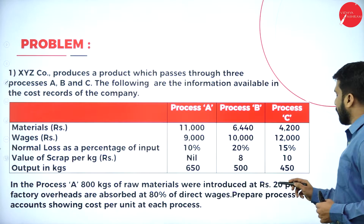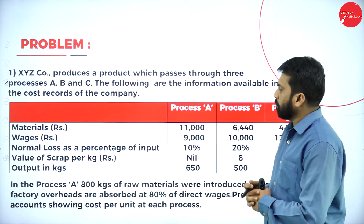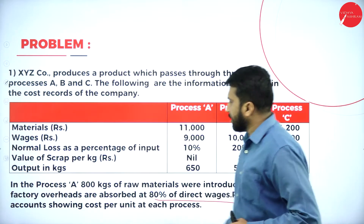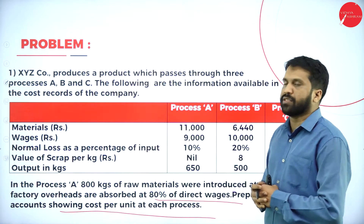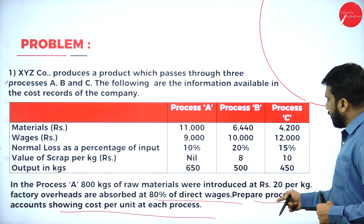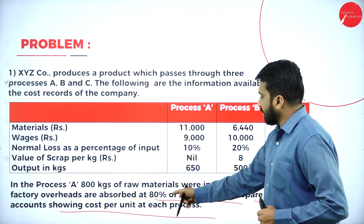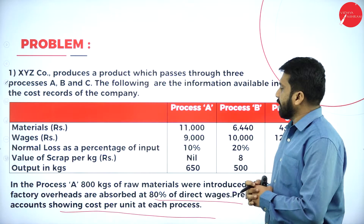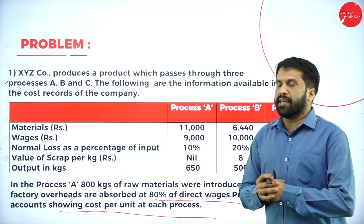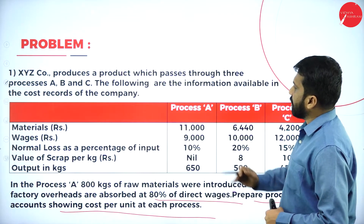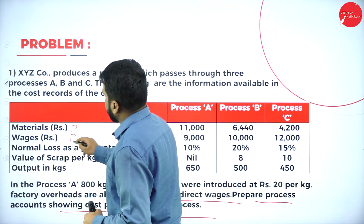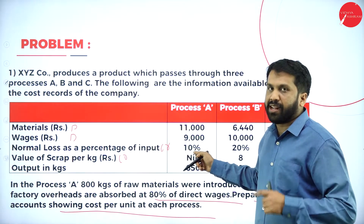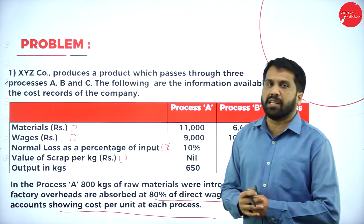In Process A, 800 kg of raw material were introduced at Rs. 20 per kg. Factory overhead is absorbed at 80% of direct wages. Material and wages go on the debit side; normal loss goes on the credit side. The value of scrap — whatever normal loss fetches — is calculated by multiplying normal loss units by the scrap value, and output is recorded in kilograms.